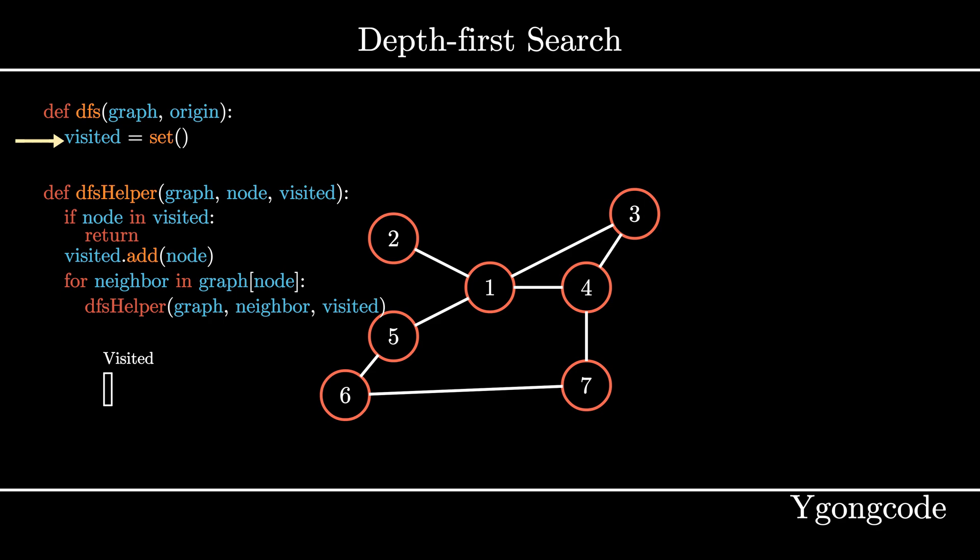We will use a set to keep track of all the neighbors we want to visit as well as all of the neighbors we have already visited to avoid revisiting them again. If we don't, we will run into infinite recursion. Notice that we also have a helper function called dfsHelper to help drive the recursive part of the implementation.